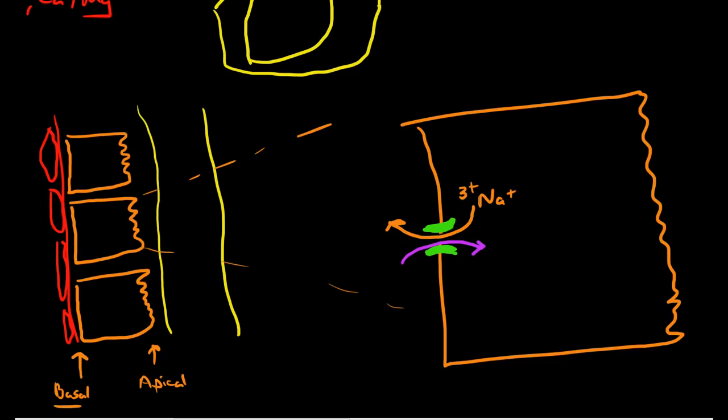So what does the sodium-potassium ATPase pump do? It pumps out three sodium in exchange for three potassium coming in. In order to do this, it's pumping against concentration gradients, because there's more sodium on the outside than there is on the inside. This exchange is occurring at the basilar surface—sodium out, potassium in.